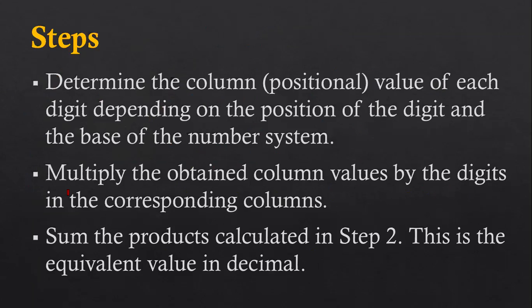The second step says: multiply the obtained column values by the digits in the corresponding columns. And the third step says: sum the products calculated in step two. This is the equivalent value in decimal.